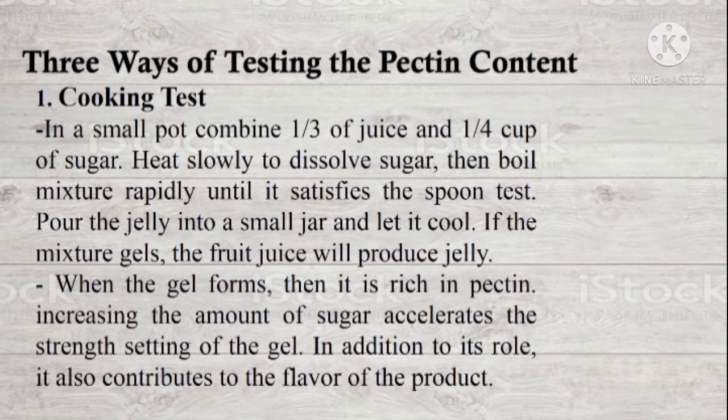There are also three ways of testing the pectin content. The first is the cooking test. In a small pot, combine one-third cup of juice and one-fourth cup of sugar. Heat slowly to dissolve the sugar, then boil the mixture rapidly until it satisfies the spoon test. Pour the jelly into a small jar and let it cool. If the mixture gels, the fruit juice will produce jelly; when the gel forms, it is rich in pectin. Increasing the amount of sugar accelerates the strength-setting of the gel, and it also contributes to the flavor of the product.